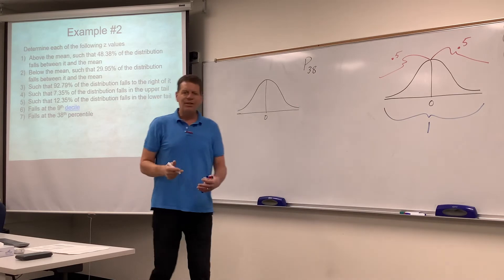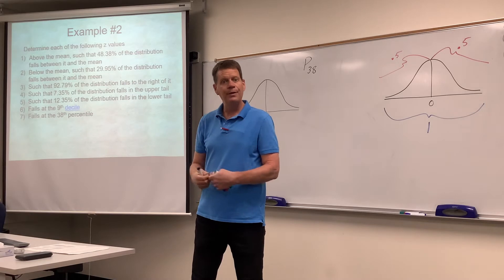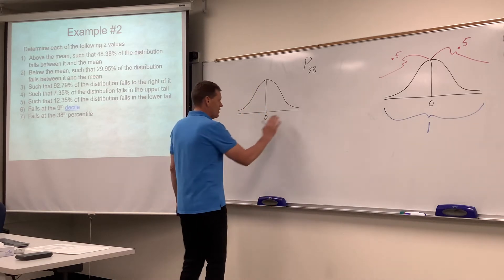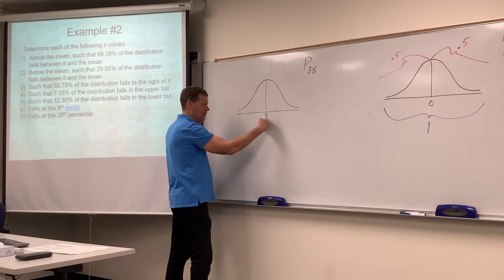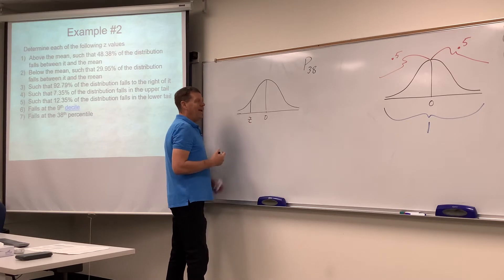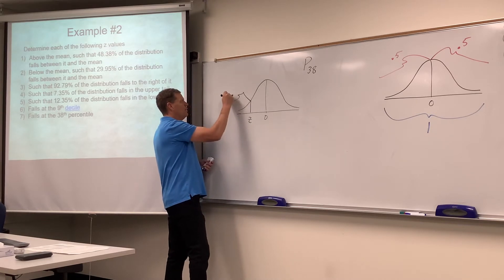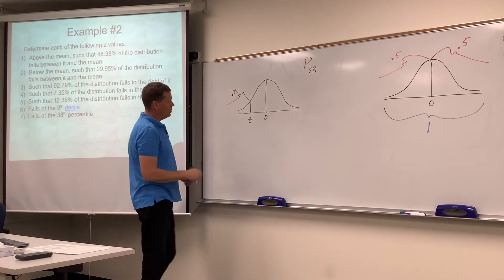Always remember that a percentile is the percentage of data that falls below, to the left of a particular score. So if it's going to be at the 38th percentile, keep in mind this is the 50th percentile because 50% of the data falls below this. Wouldn't the 38th percentile have to be somewhere down here below the mean? And so the 38% would be the percentage of data that falls below, to the left of that particular score. So this is where the .38 would come into play.